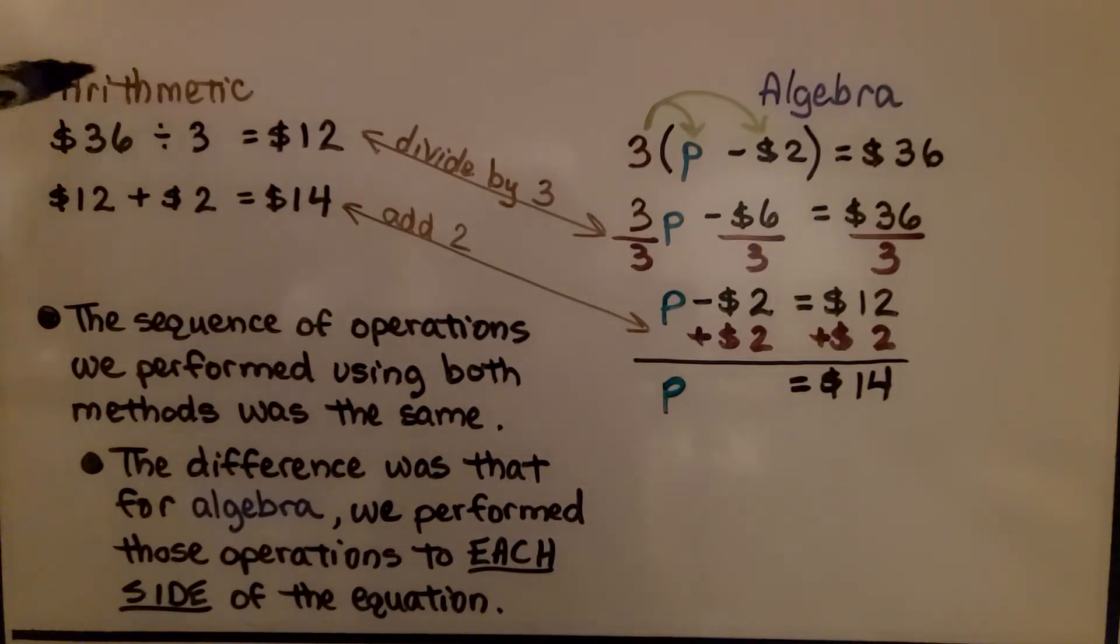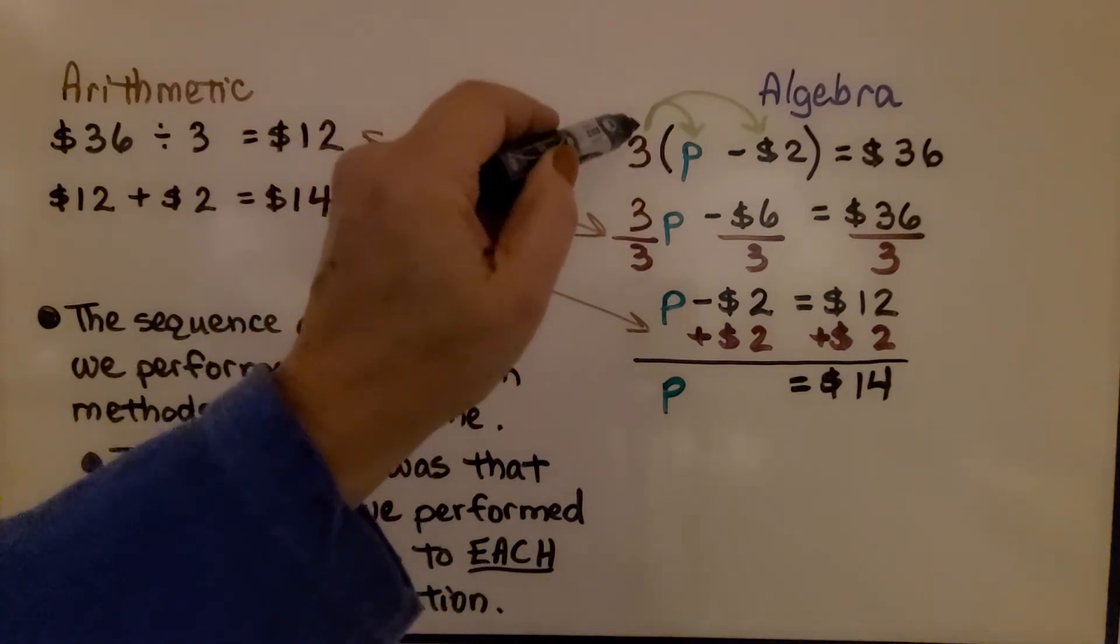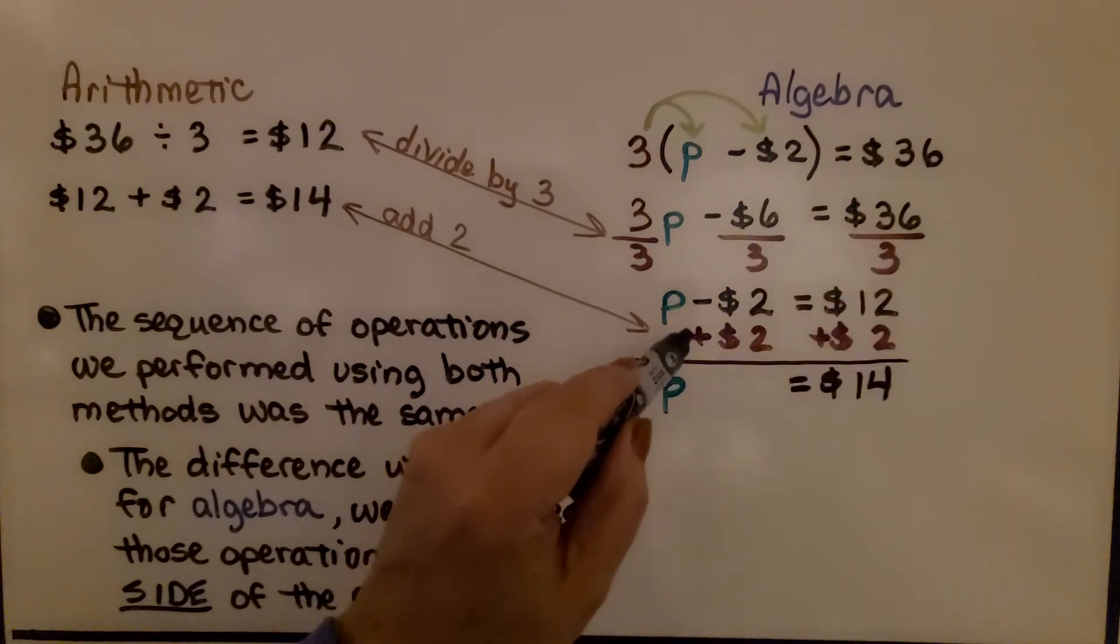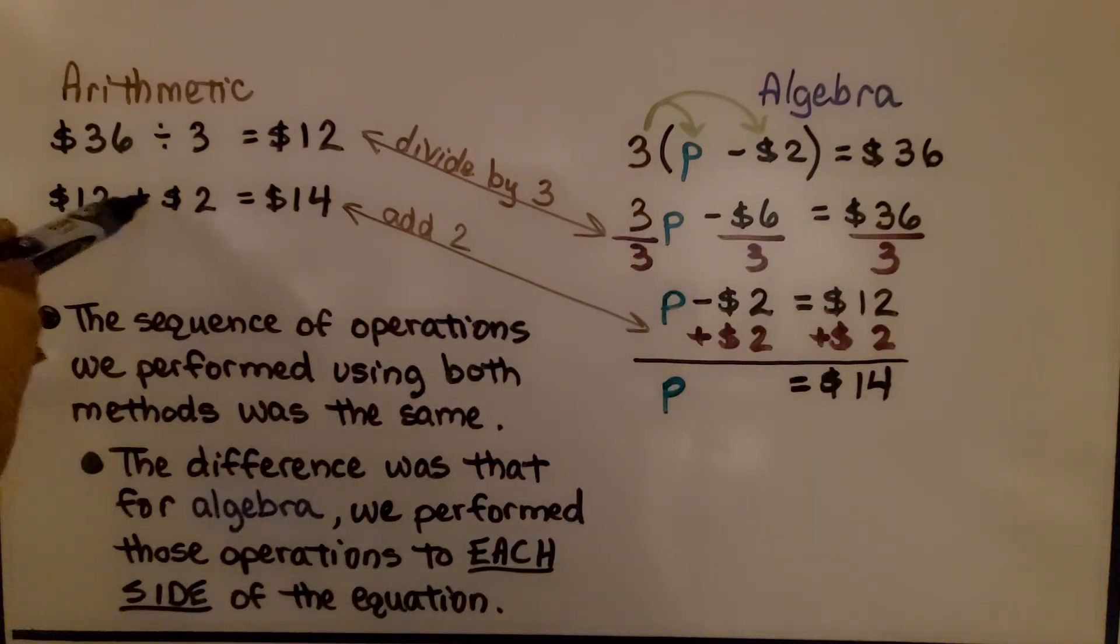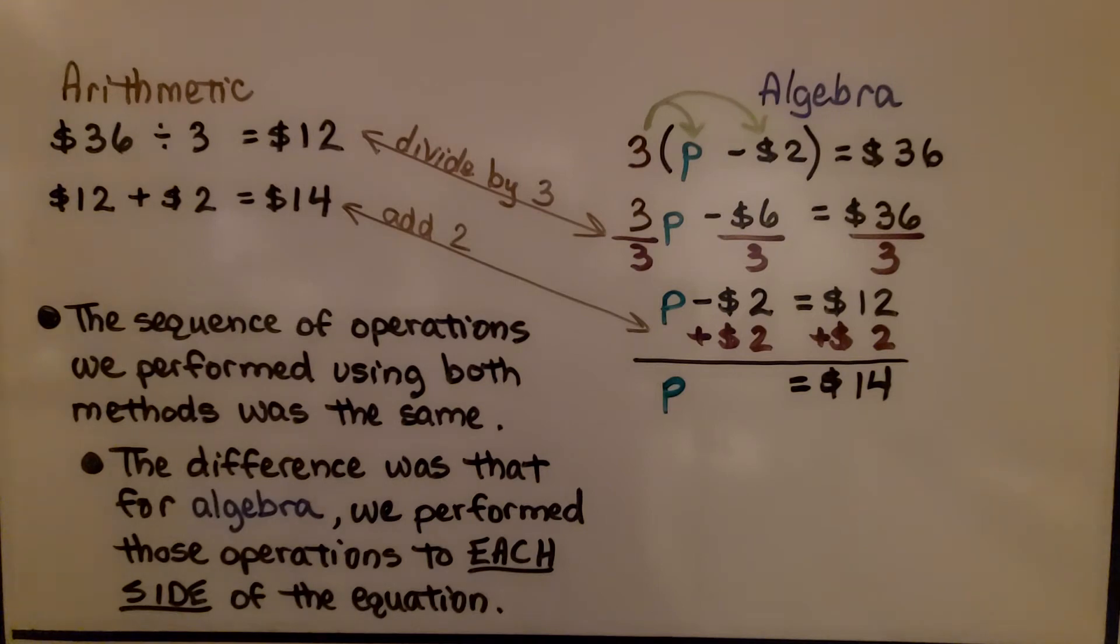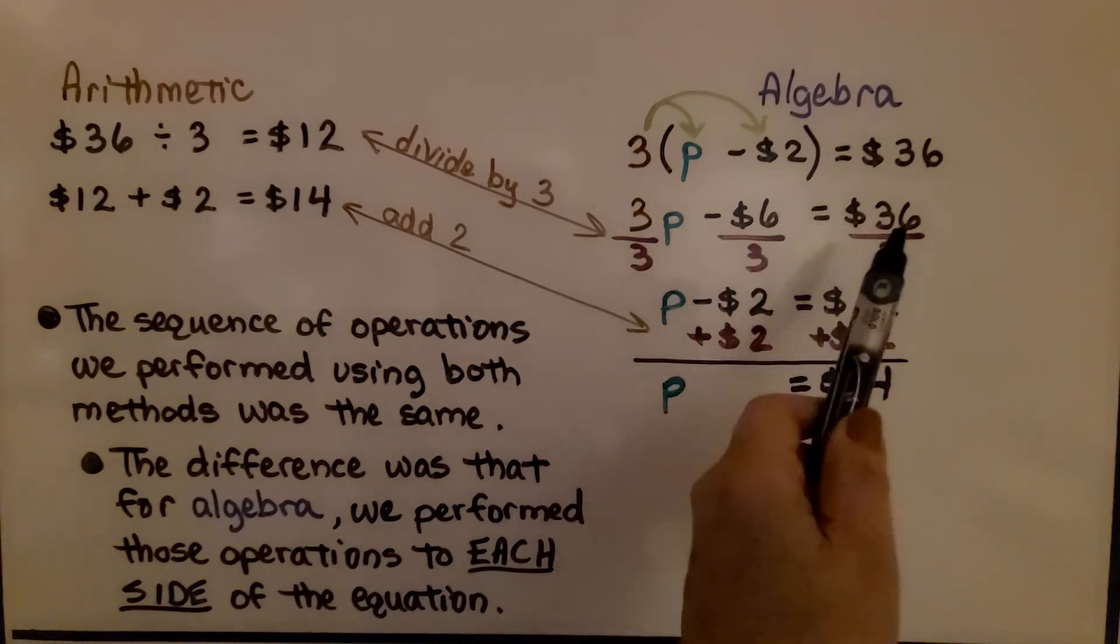So let's dig a little deeper. When we did it the arithmetic way, we did $36 divided by 3 equals $12. Then we had $12 and we added back on that $2 coupon and got $14. When we did it the algebra way, let's look at the distributing way. We distributed this 3 to the p and the minus $2. Then we divided each term by 3. Then we added $2 to each side. Well, when we were here, we divided by 3. We have 36 divided by 3, and here we're divided by 3. When we added the $2 for here, we also added $2 for here. Same operations. The sequence of operations we performed using both methods was the same. The difference was that for algebra, we performed those operations to each side of the equation, to each side of the equal sign, or to each term.